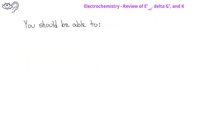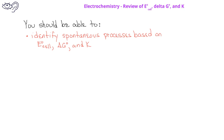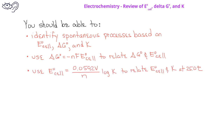After watching this video, you should be able to identify spontaneous processes based on the standard cell potential, the standard free energy change, and the equilibrium constant for the process. You should also be able to use the equation ΔG° equals minus nFE° to relate the standard free energy change and the standard cell potential. Finally, you should be able to use the equation relating the standard cell potential and the equilibrium constant K to find the relationship between these two values at 25 degrees Celsius.